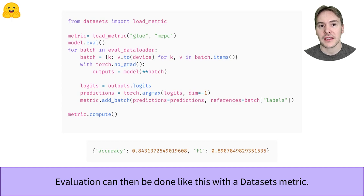Once this is finished, we can evaluate our model very easily with a metric from the Datasets library. First, we put our model in evaluation mode to deactivate layers like dropout, then go through all the data in the evaluation data loader. As we've seen in the Trainer video, the model outputs logits, and we need to apply the argmax function to convert them into predictions. The metric object then has the addBatch method we can use to send it those intermediate predictions. When the evaluation loop is finished, we just have to call the compute method to get our final results. Congratulations! You have now fine-tuned the model all by yourself.